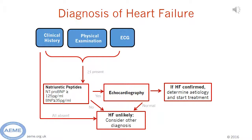If they're elevated, it's possible they have heart failure, but it's important to remember that there are many other reasons why a BNP may be elevated, including pulmonary disease, and most notably atrial fibrillation. Atrial fibrillation can be associated with a BNP in the thousands, and in that setting, the raised BNP doesn't offer you any clues as to whether the patient has clinical heart failure or not.